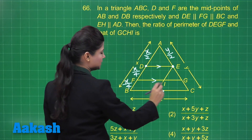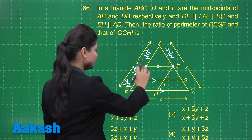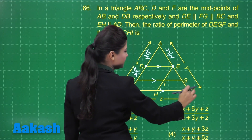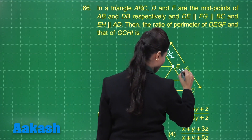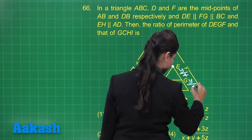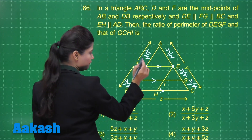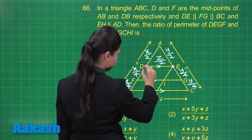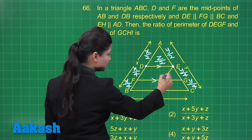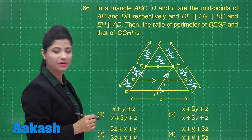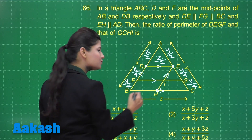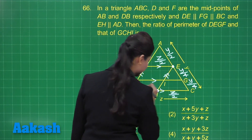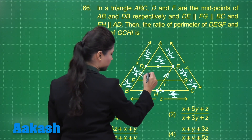FG is also parallel to BC. Applying the intercept theorem, since F is the midpoint of DB, G will be the midpoint of EC. So EG = GC = Y/4. Using the midpoint theorem, DE = Z/2. EH is given to be parallel to AB, and since E is the midpoint of AC, H is also the midpoint of BC, giving BH = HC = Z/2.